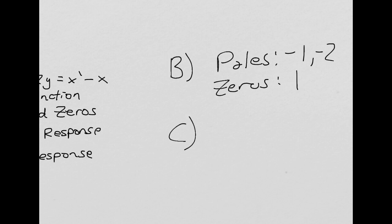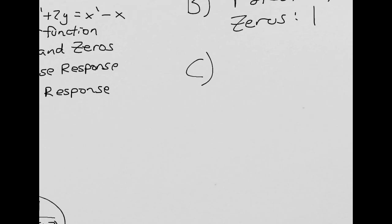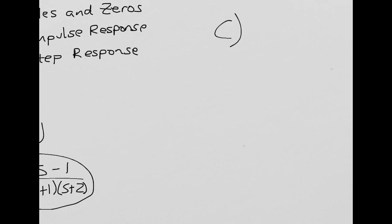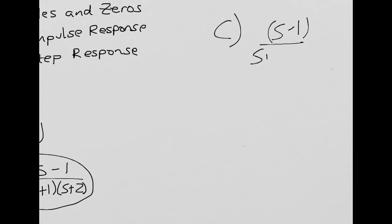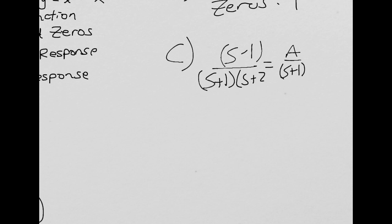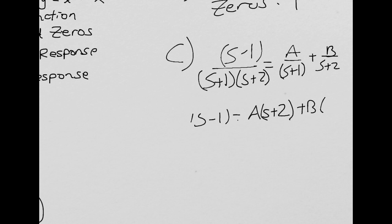Part C — we want to find the impulse response. To find that, we'll take our transfer function and do a partial fraction decomposition. So we have (s − 1) / [(s + 1)(s + 2)] = A/(s + 1) + B/(s + 2). Solving: s − 1 = A(s + 2) + B(s + 1), which gives us A = −2 and B = 3.